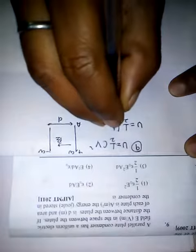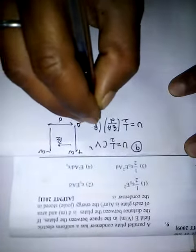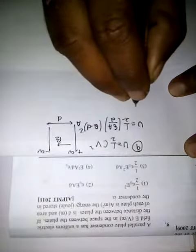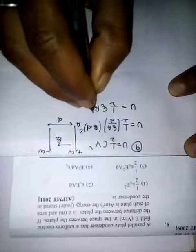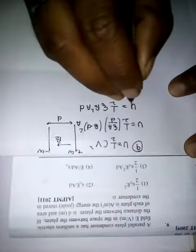So the capacitance of the parallel plate capacitor is epsilon naught A by D, and potential will be E into D, the whole squared. So half epsilon naught E square A into D.